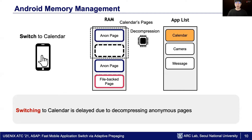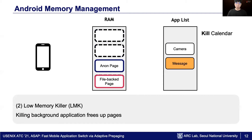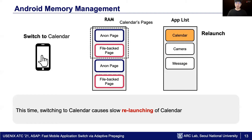However, if the calendar accesses a decompressed page during switching, decompression is required in this case, so the switching is delayed. Likewise, the evicted file-backed pages should be read from disk on demand, so switching is delayed. Another way Android uses is the low-memory killer. When the low-memory killer kills the calendar app, its process and all pages are freed up from memory. In this case, switching to calendar requires a relaunching of the application, causing long latency.